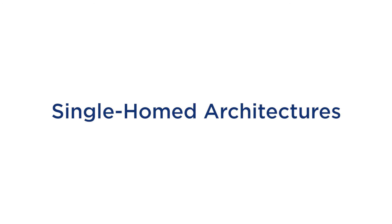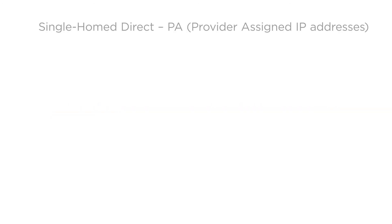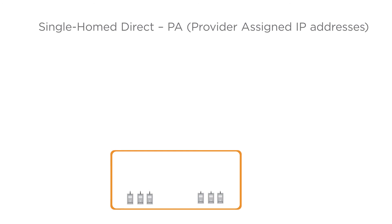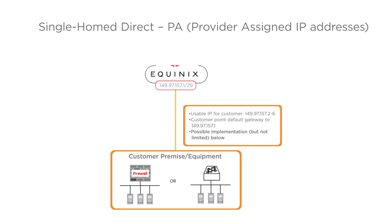Single-homed architectures: Single-homed direct provider-assigned IP addresses, most common for out-of-band applications. This is a very simple configuration. The customer is using a flat network, meaning there is no routed network. The default IP address assigned is a slash 30, meaning that the customer will have one usable IP address for configuring their firewall or switch.